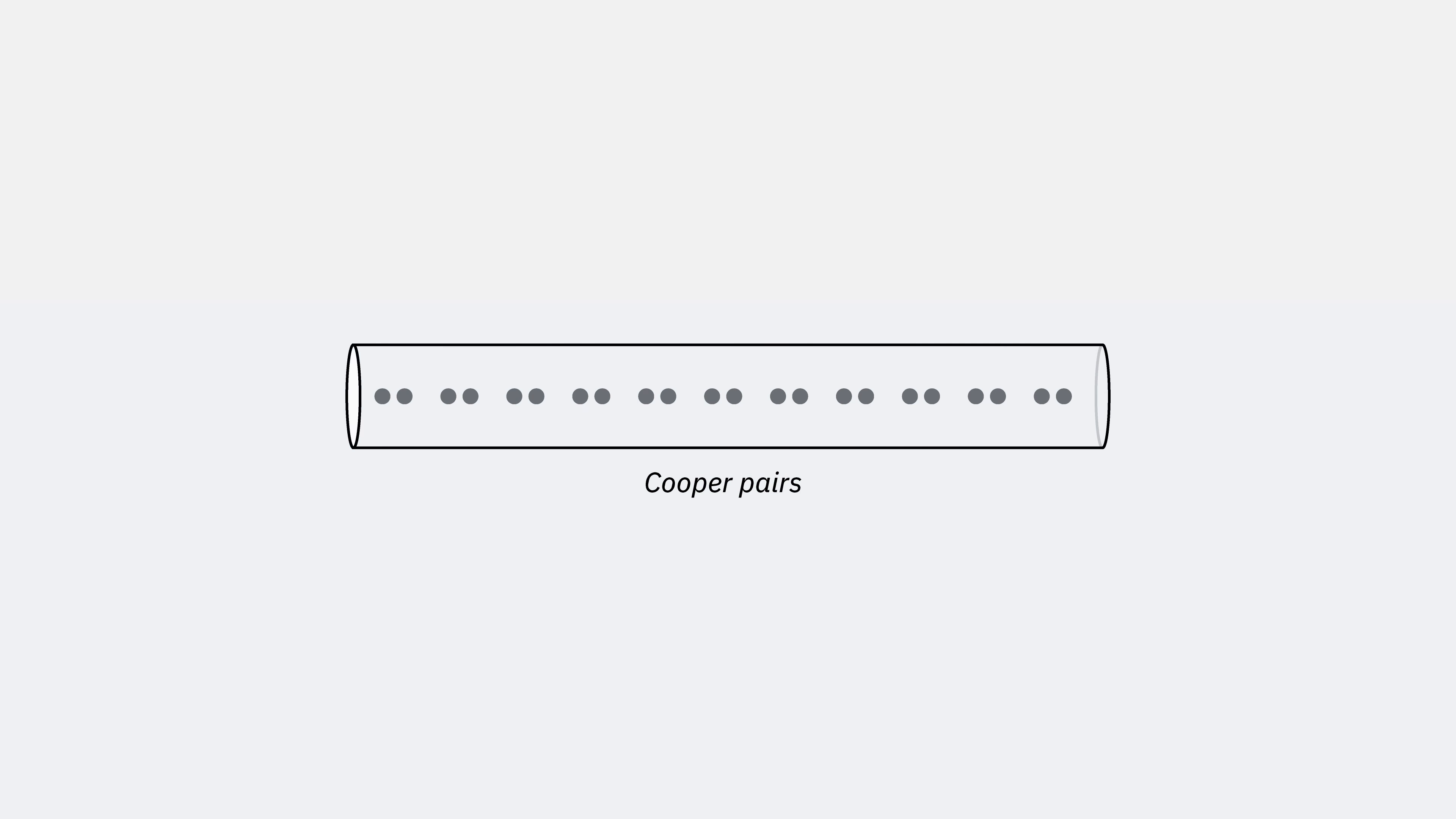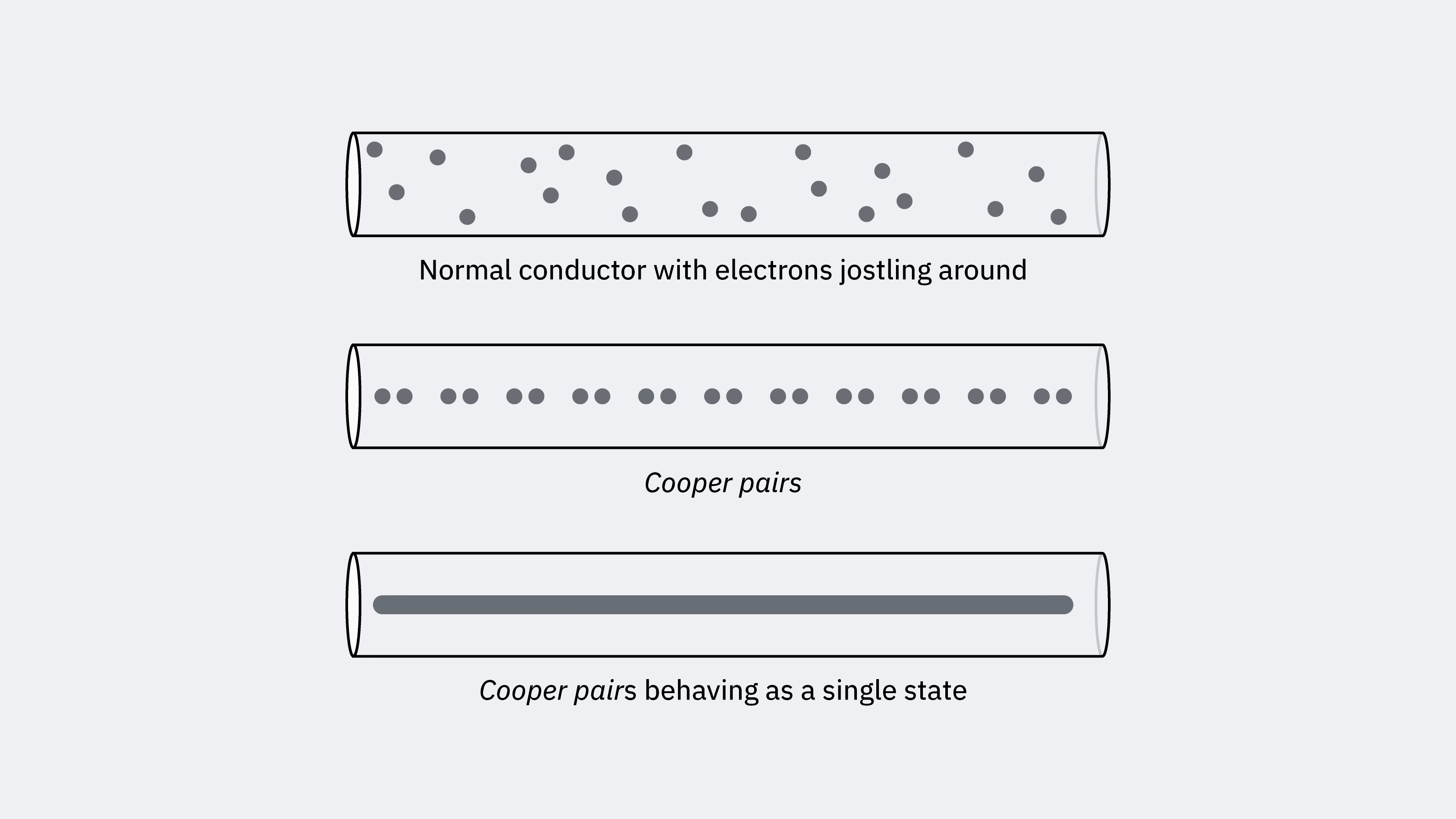In a superconductor, electrons pair off to form Cooper pairs. These pairs behave differently from unpaired electrons. While individual electrons can have different energies and momenta, Cooper pairs in a superconductor collectively condense into one macroscopic quantum state. Let me repeat that because it's important: all the current-carrying electrons in the entire superconducting sample are in the same state.